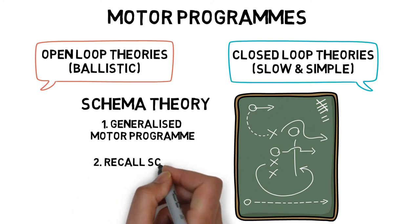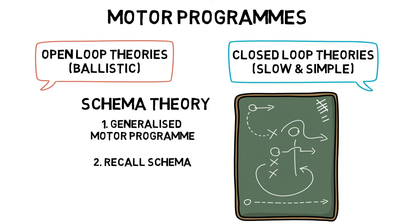A recall schema, which makes adjustments to the generalized motor program after understanding the situation you are in and your intentions, such as your opponent's position. And a recognition schema, that lets you know the result of the skill through movement outcomes and sensory consequences.